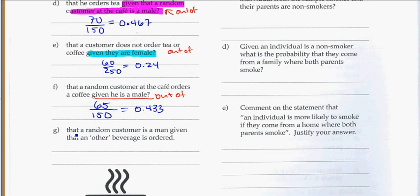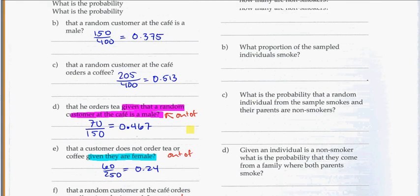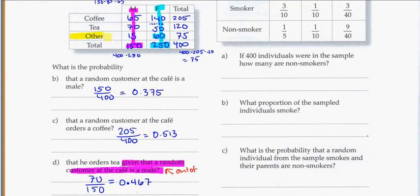The last question here, that a random customer is a man, given that an other beverage is ordered. So here, given that the other, that's the category that we're looking out of. So from all these people, what's the probability of them being a man? And that's 15 out of 75.